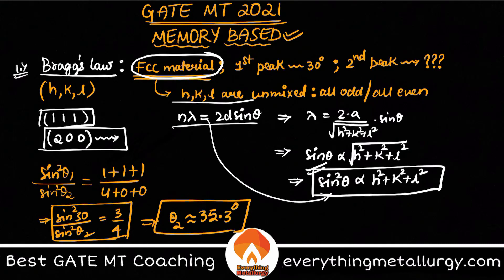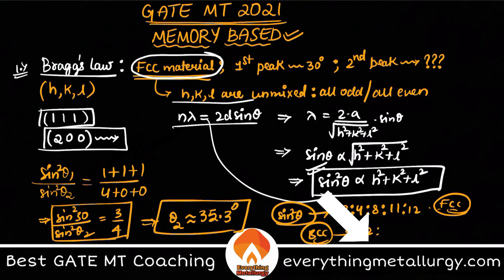And of course no need to do all this also. For FCC the sin² θ ratio will be 3:4:8:11:12 and so on. This is for FCC.